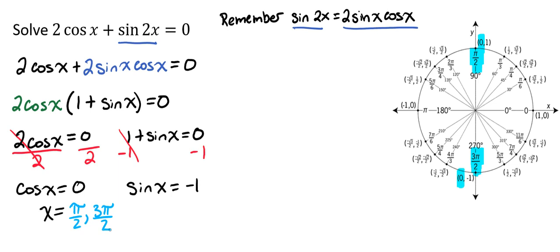On the right-hand side, we want to know where is the sine of x equal negative 1. Sine is the y value, so we want to know where is y negative 1. We see that only occurs at one place, which is right here at 3 pi over 2.